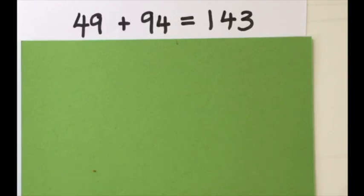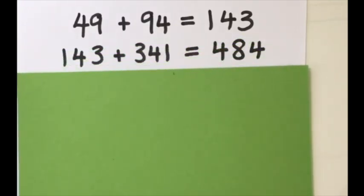143 is not a palindrome, so I start with the number 143 and I reverse it to 341 and I add and I get 484. This is now a palindromic number. It's taken two steps or two addition calculations for the number 49 to become palindromic.